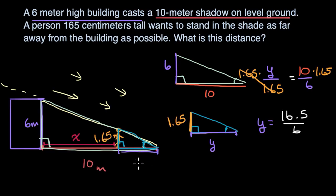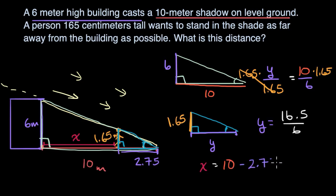This distance Y right over here is 2.75 meters. But if you want X — the distance from the building — X is equal to 10 meters minus 2.75 meters, which is equal to 7.25 meters. So that's how far the person can walk away from the building.